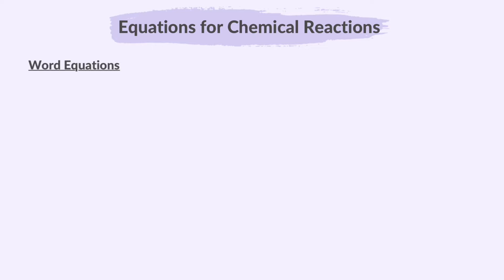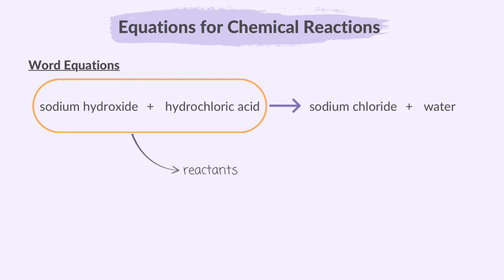Word equations are like written descriptions of chemical reactions. You describe what's happening using words. For example, sodium hydroxide and hydrochloric acid react to form sodium chloride and water. Sodium hydroxide and hydrochloric acid are the reactants in this reaction. Reactants are the substances you start with in a chemical reaction. The products are the substances that result from the reaction, in this example sodium chloride and water.